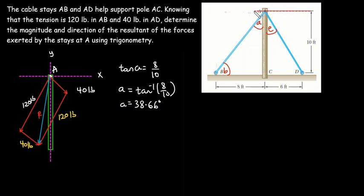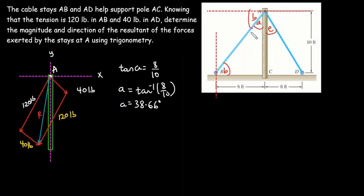I'll draw another horizontal line to represent the x-axis and another vertical line to represent the y-axis. We know the value of angle A. This angle here will be the same as angle B because they are z-angles (alternate angles), and this angle here will also be the same as angle A.